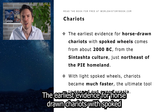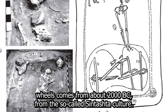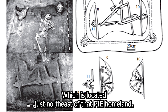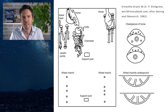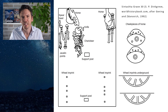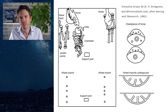The earliest evidence for horse-drawn chariots with spoked wheels comes from about 2000 BC, from the so-called Sintashta culture, which is located just northeast of the PIE homeland. These spoked wheels made wheels much lighter, and therefore chariots much faster than wagons, and they became the ultimate tool to spread out over Eurasia. Here we see one of those chariot graves. At the top we see what might be a charioteer with a few weapons, next to two horses. At the bottom we see the imprints of two wheels with spokes. The wood had long deteriorated, but it stained the soil, allowing the shape of these wheels to remain visible.